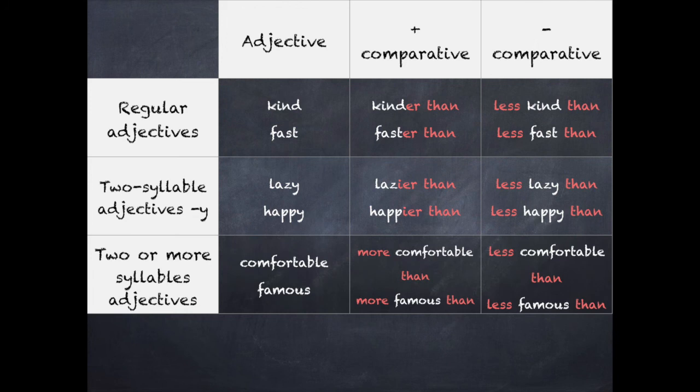For the long adjectives, two or more syllables like comfortable or famous, we will use more than. For example, more comfortable than or more famous than, and in the negative form, less comfortable than and less famous than.